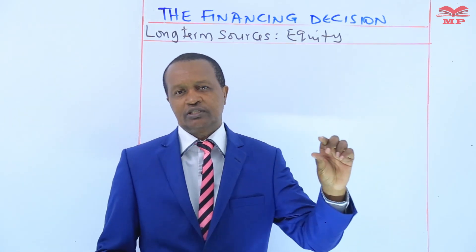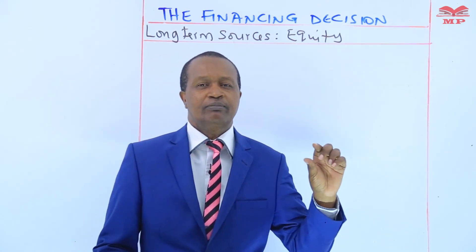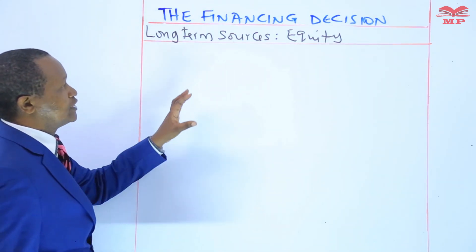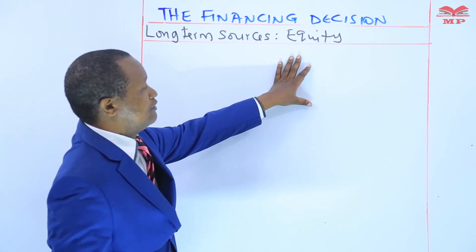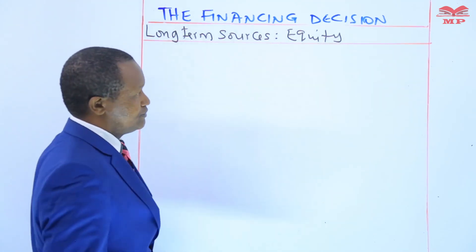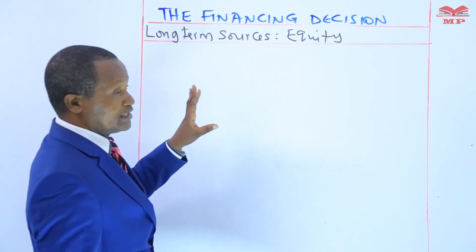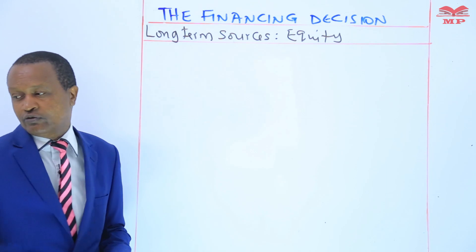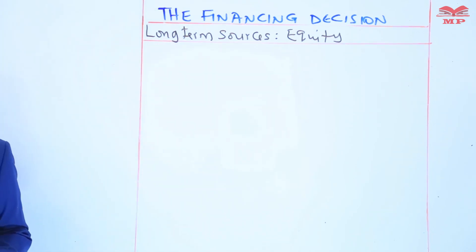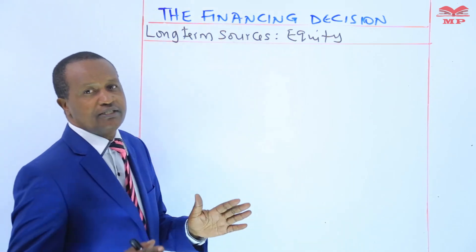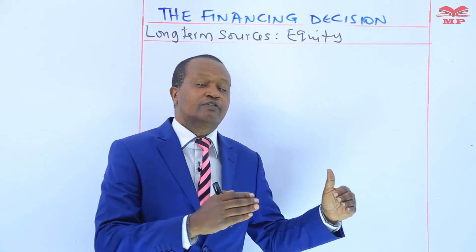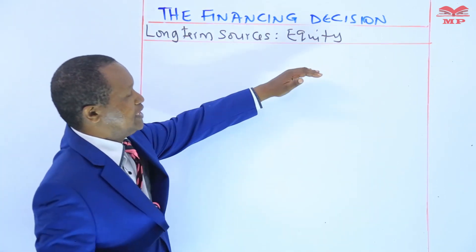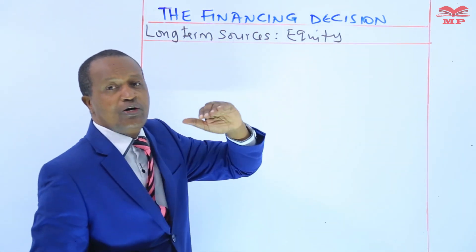Today we begin with the long-term sources of funds. The first category is equity. In this lesson we will study the characteristics of equity, as well as the pros and cons of equity. Equity represents a long-term source of funds for companies, providing capital contributed by the owners or shareholders.